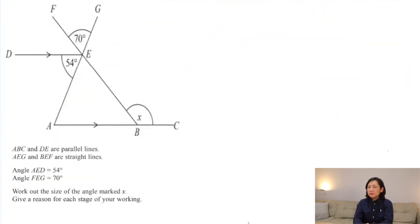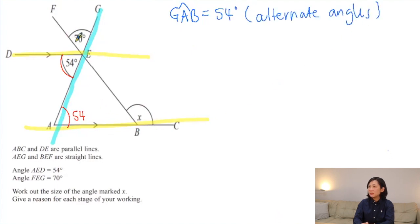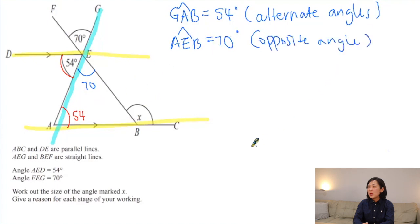The next question is getting trickier, but don't worry. As always, identify the parallel lines — another line crosses the pair of parallel lines. Begin with the angle you already know; you can quickly notice the 54. We've got an alternate angle, so angle GAB is 54 because it's an alternate angle. We also spot the vertically opposite angle: angle AEB equals 70 because these are vertically opposite angles.